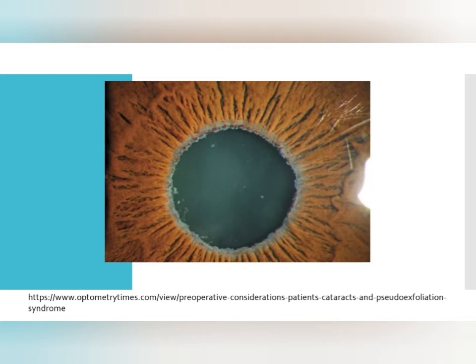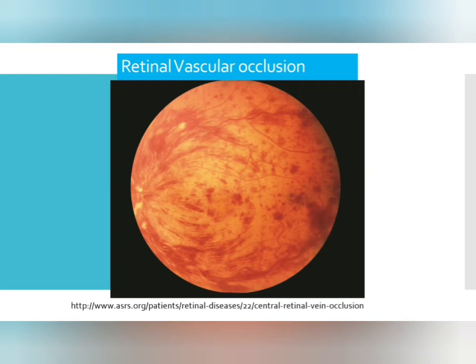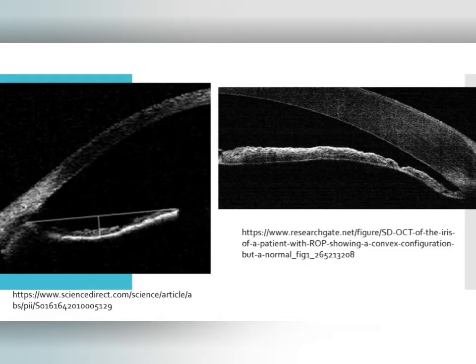In pseudoexfoliation syndrome, white fluffy material deposits on the lens epithelium, travels with the aqueous humor, and gets stuck at the pupillary margin — called 'rough iris.' Gonioscopy is needed in these cases. Retinal vascular occlusion is an indication to rule out NVI. In high myopia or hypermetropia: myopic patients have a concave iris and hypermetropic patients have a convex iris. If during gonioscopy the iris appears concave, send the patient for UBM (ultrasound biomicroscopy) for proper identification of the iris pattern.